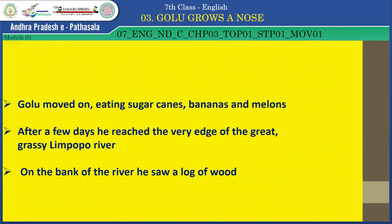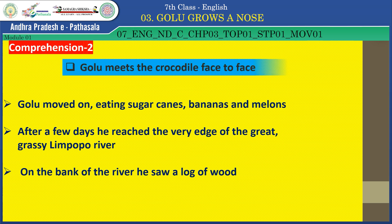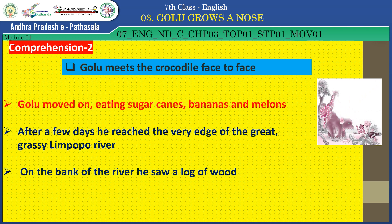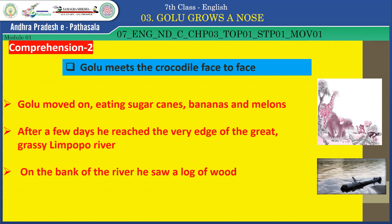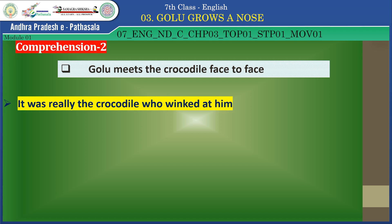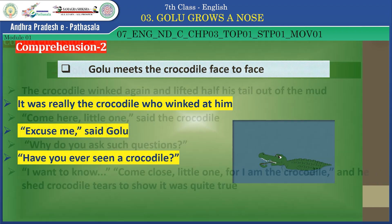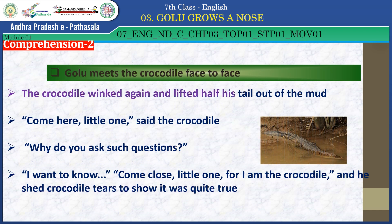Comprehension 2: Golu meets the crocodile face to face. Golu moved on, eating sugar canes, bananas, and melons. After a few days, he reached the very edge of the great, grassy Limpopo River. On the bank of the river, he saw what he thought was a log of wood — but it was really the crocodile, who winked at him. 'Excuse me,' said Golu, 'Have you ever seen a crocodile?' The crocodile winked again and lifted half his tail out of the mud, and shed crocodile tears to show it was quite true.